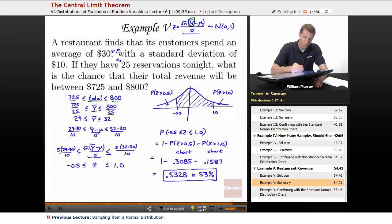Now what I really know is a result about the average that each customer tonight is going to spend. So I wanted to convert that total into an average. And so I just divided it by the number of customers. So the total divided by the number of customers gives me the average. And $725 over $25 gives me $29, $800 over $25 gives me $32.